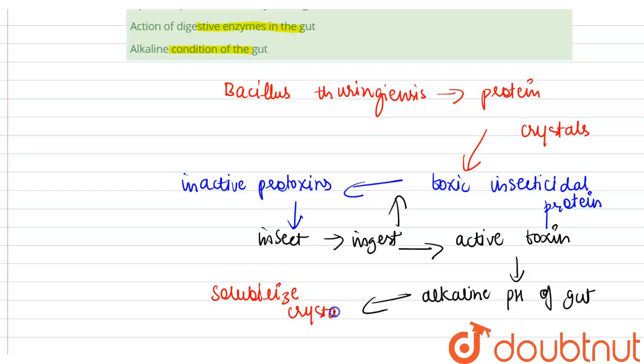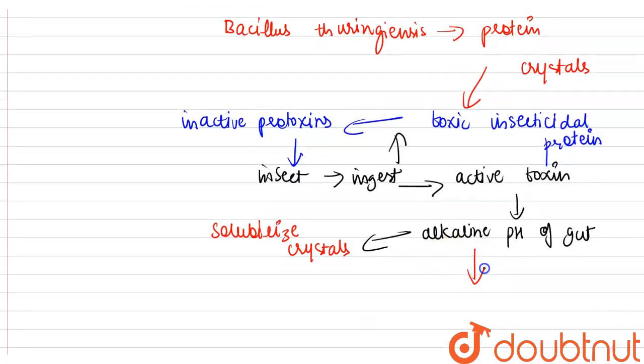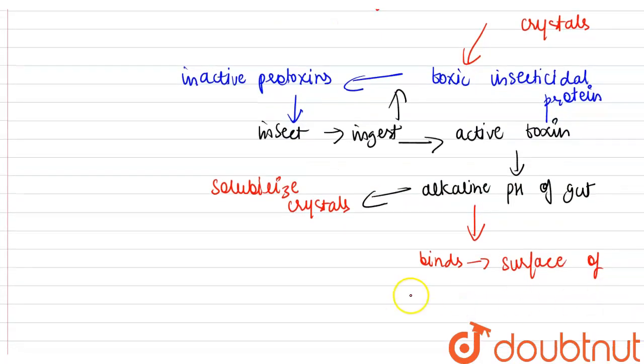The activated toxin binds to the surface of midgut epithelial cells, the activated toxin binds to the surface of midgut epithelial cells and creates pores.